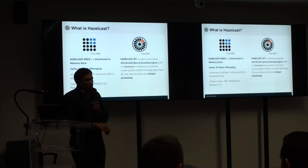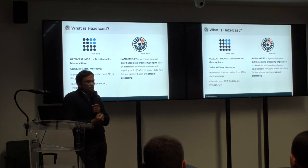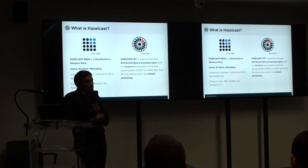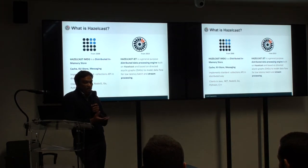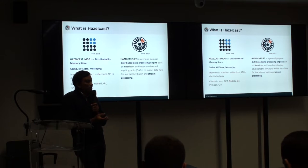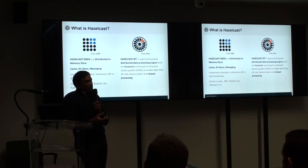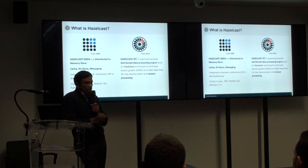Hazelcast has got two products: IMDG and Jet. IMDG — I hope most of you know about it already — is for storing data in memory. It provides ultra-fast access to data stored in memory, allows for searching across that data, and you can use it as a compute grid. You can create aggregate calculations or submit tasks to the grid so computation happens closer to the data. Hazelcast IMDG also provides messaging — topics and queues — so it is a versatile solution with very wide use.